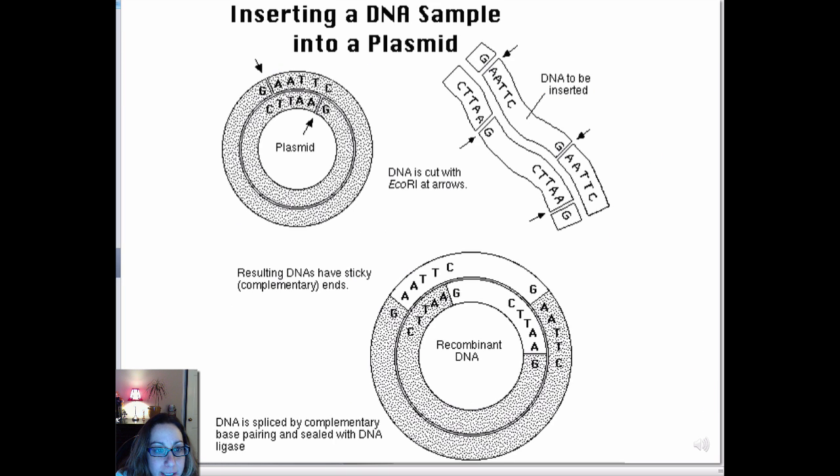So here is an example with the actual plasmid. So you have your circular double-stranded plasmid here. ECOR1 is being used to cut between the G and the A at the recognition sequence GAATTC in both strands of your plasmid. Generating sticky ends, you have your DNA that you want to put in. So let's say we have some gene from a horsefly that generates a specific phenotype that you want to study.